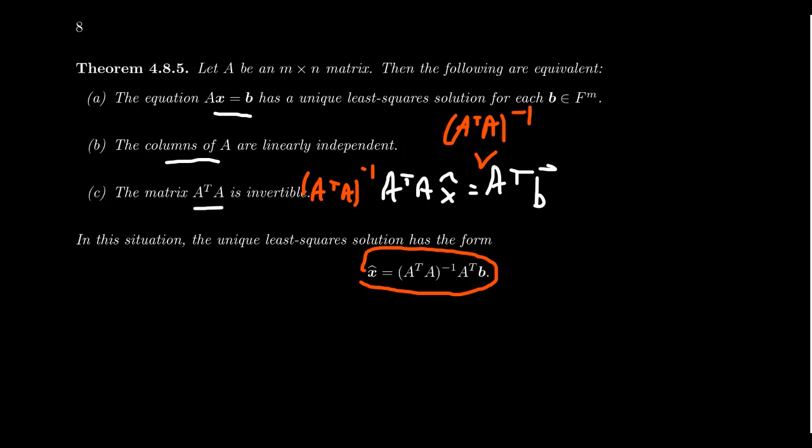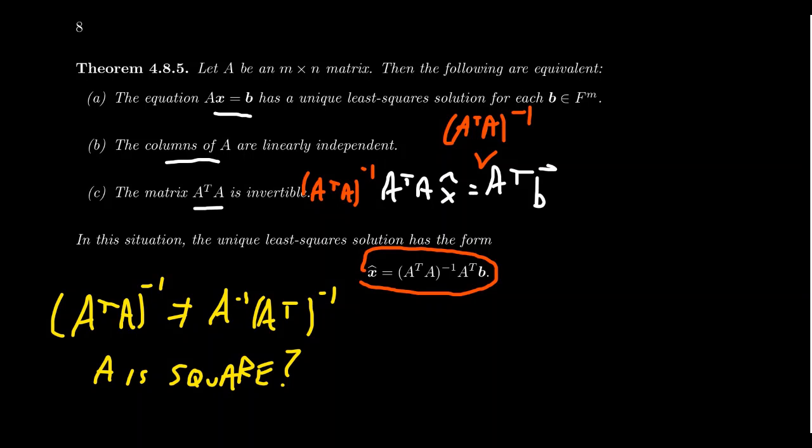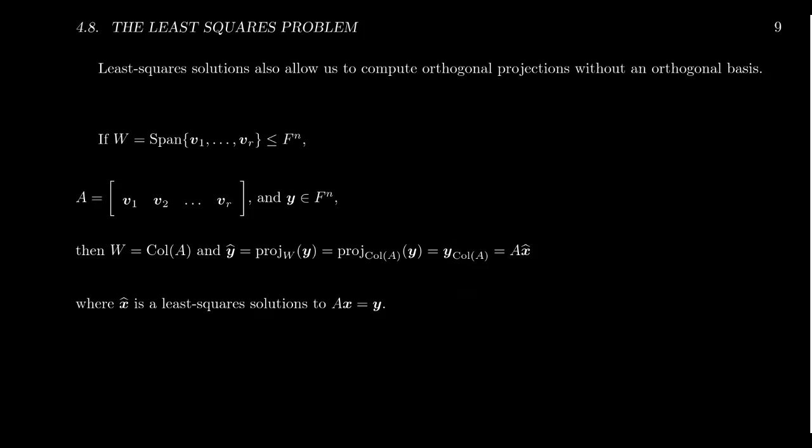Now I want to caution you here that A transpose A inverse is not necessarily the same thing as A inverse A transpose inverse. The issue here is that A, is it a square? We don't actually know. Now if A was a square matrix, then yes, we could say that very thing. But A could be any rectangular matrix, so A inverse might not even make sense. But A transpose A can still make sense, because even when A is a non-square matrix, A transpose A will always be a square.